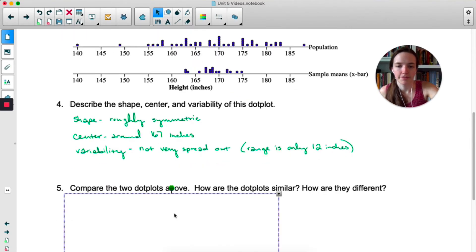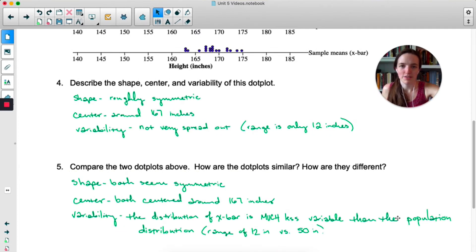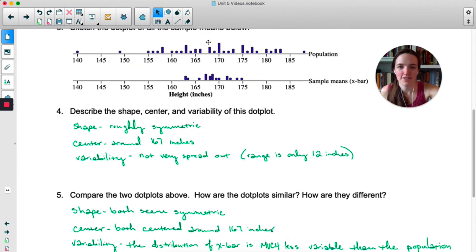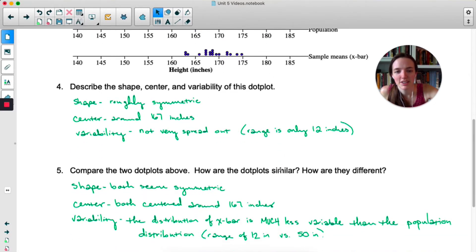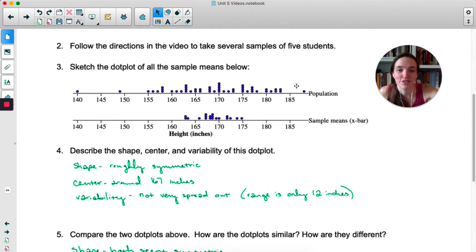So now let's compare. I would say for the shape, both of these seem symmetric. The population even seems to be normal. The centers, they both look to be around 167, and the variability, it's much less variable in the sampling distribution. So the range of the sampling distribution is 12 compared to almost 50 in the population.